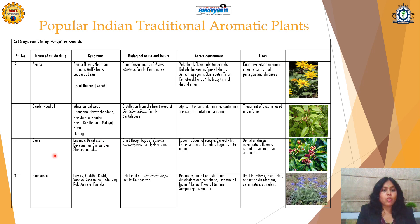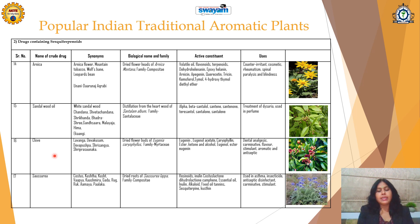Next is Clove, which is called as Lavang, Devakusum, or Devapushpa. It is the dried unripe flower bud of Eugenia caryophyllus, Family Myrtaceae, which contains the major ingredients eugenol and caryophylline. It is used as a dental analgesic as per various Ayush texts. It is also a carminative, flavorant, condiment, stimulant, and found to be antiseptic.